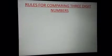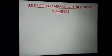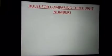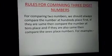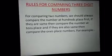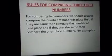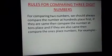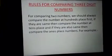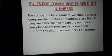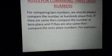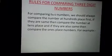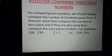Now rules for comparing three digit numbers. For comparing two numbers we should always compare the number at hundreds place first. If they are same then compare the number at tens place, and if they are also same then compare the ones place numbers. Now let's see some examples related to it.